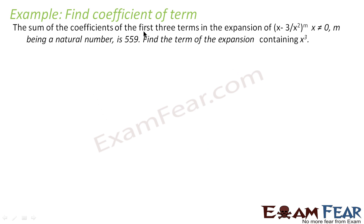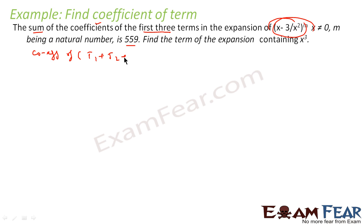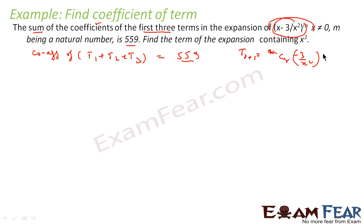In this example, we are told that the sum of coefficients of the first three terms of the expansion is 559. That is, coefficient of T1 plus T2 plus T3 is equal to 559. We know that T(r+1) for this equation will be mCr times (-3/x²)^r times x^(m-1).